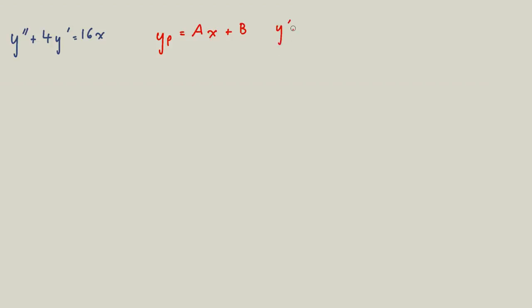This will give us y prime of p is equal to a, and y double prime p is equal to 0. So we'll then take these and substitute it into this equation right here. So we have 0 plus 4a is equal to 16x.